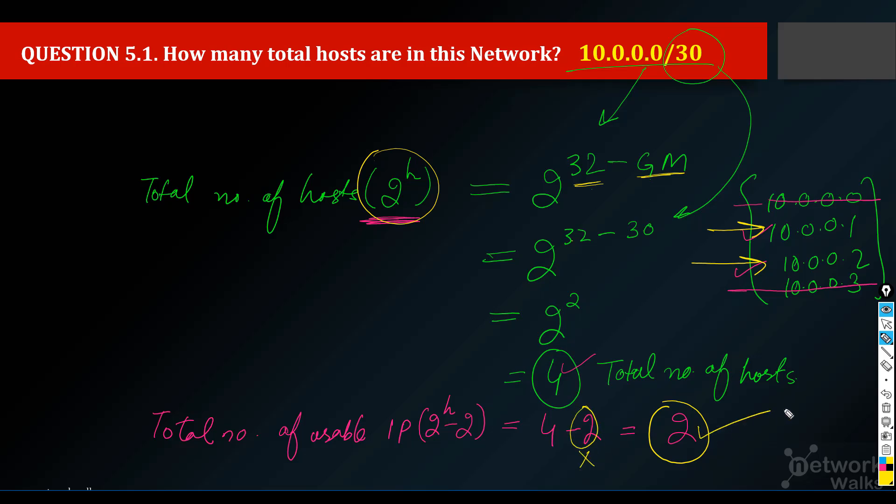In an interview, if an interviewer asks how many usable IP addresses are in slash 30 or any of this kind of question, we can say 2. If they say how many total number of IP addresses, we can say 4.